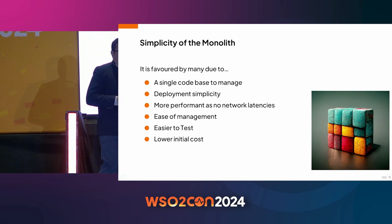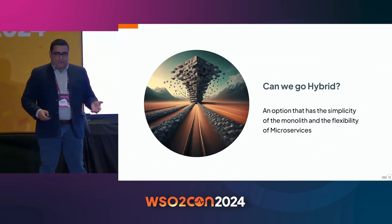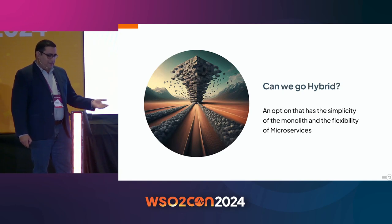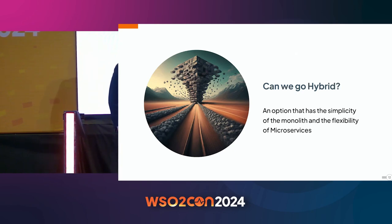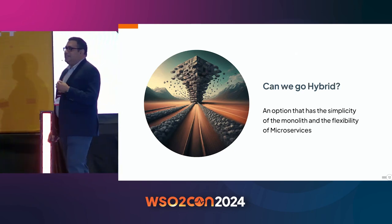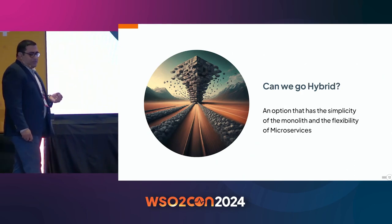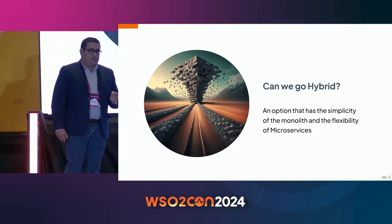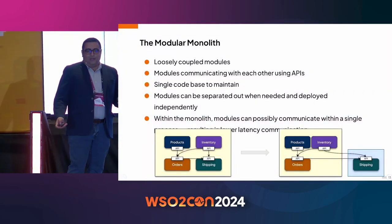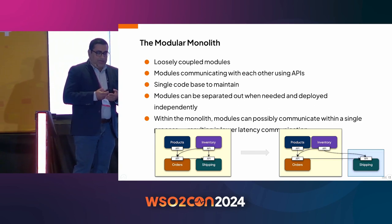We moved out of the monolith to microservices for several reasons, but we are now seeing certain benefits in the monolith. So is there a best of both worlds — an option with the simplicity of the monolith and the flexibility of microservices? There apparently is. There's something called the modular monolith that people are now working on, and it's becoming a very popular architectural style.